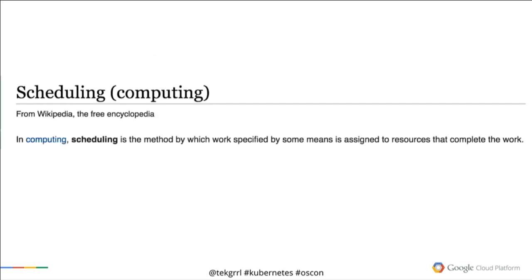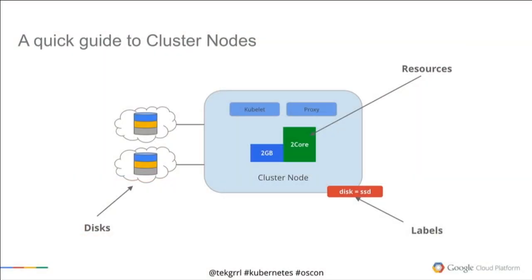Scheduling itself — and this is a term we're repurposing, very similar to the Linux scheduler — is a method by which something you want to run can be assigned to resources that can run it. To better understand scheduling, we need to understand the structure of a node within our cluster. A node has CPU and memory resources, and can also mount external or network-attached disks. Nodes can also have labels, so pods within our cluster can be a little snowflakey — they might need an SSD disk or a GPU — and we can identify them specifically by a label.